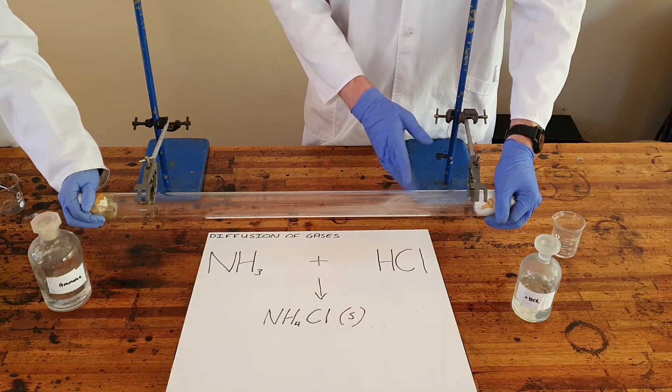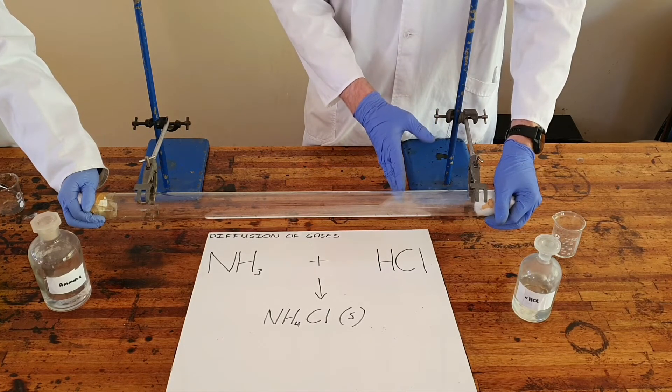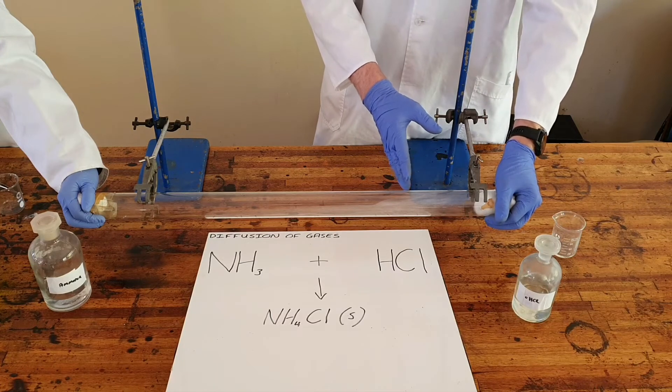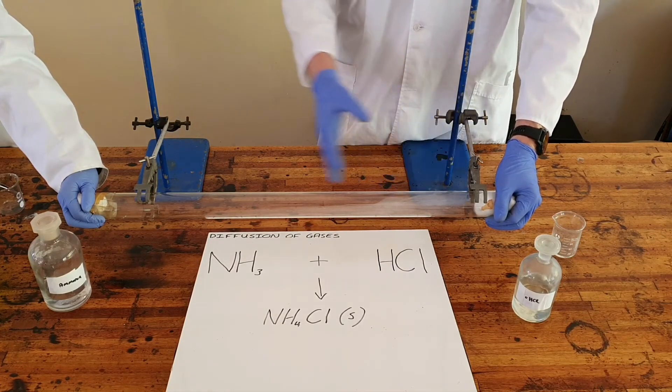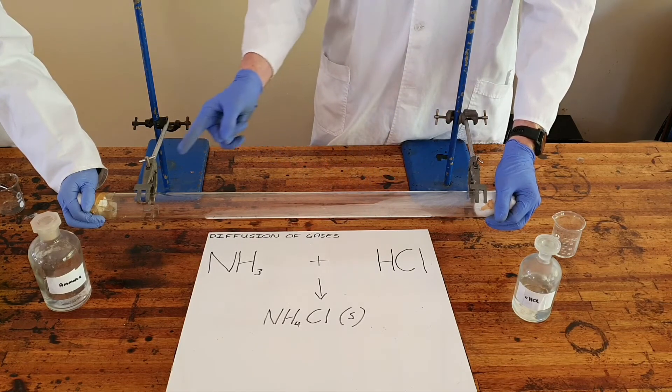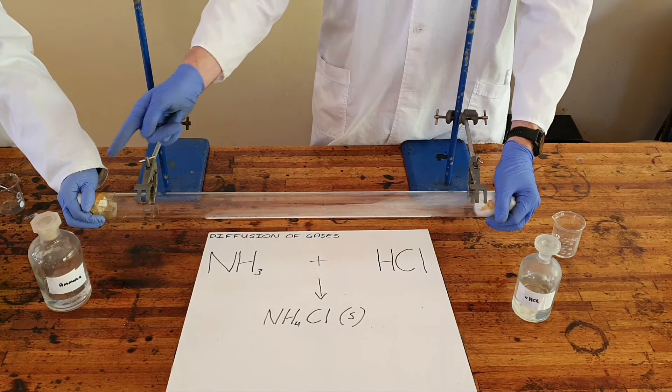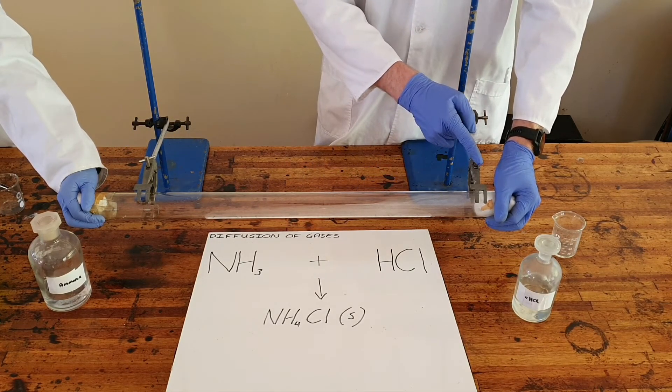Here we can start to see a white cloud that is forming. What this demonstrates very clearly is that these gases have been able to move through the air that is inside this tube, and also it has shown us that the ammonia gas has traveled a far greater distance than the hydrochloric acid gas.